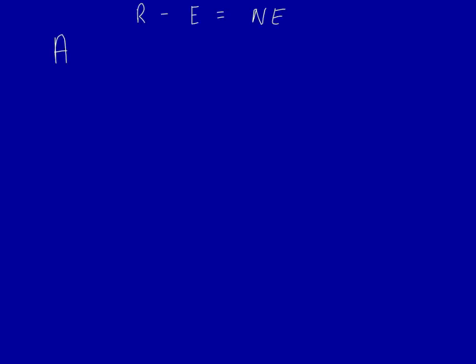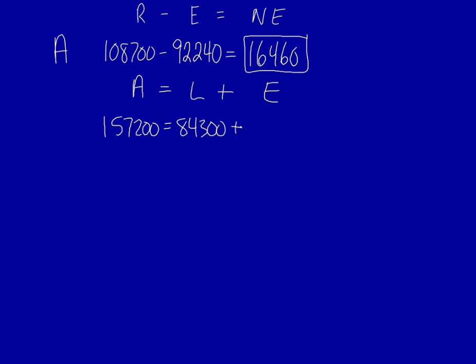For company A, we have revenues of 108,700. Subtract the expenses, 92,240. That's equal to net earnings of 16,460, the amount we were supposed to calculate. Now let's look at the basic accounting equation and plug in the known numbers. Solve for the unknown equity and it's equal to 72,900.